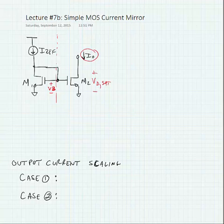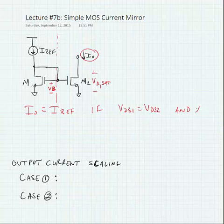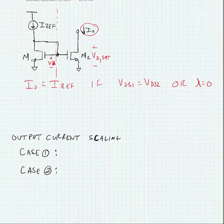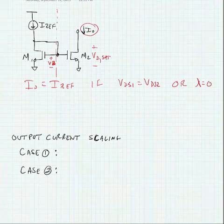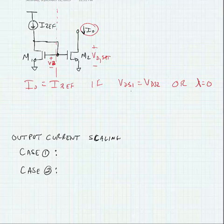The basics of this simple MOS current mirror are that the output current I_out is equal to the reference current I_ref if VDS1 is equal to VDS2, or lambda is equal to zero. Even if VDS1 is not equal to VDS2, if lambda is small then the output current should approximate the reference current.